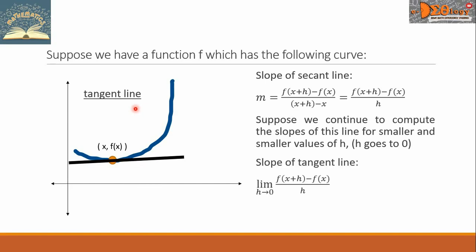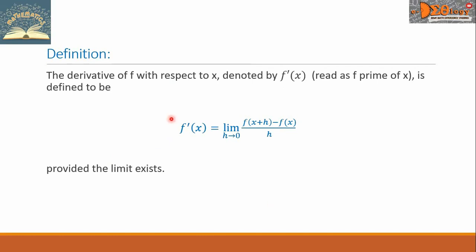Now, with regard to the slope of tangent line, we will now write the limit of f(x+h) minus f(x) all over h as h approaches 0. This time, let us have a formal definition. The derivative of f with respect to x, denoted by f'(x), is defined to be f'(x) equals the limit of f(x+h) minus f(x) all over h as h approaches 0, provided the limit exists.